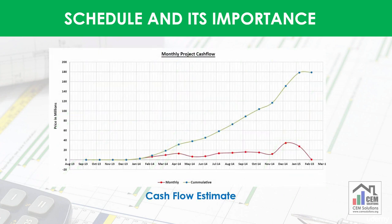Schedule helps in making project funding requirements or cash flow estimates. Cash flow is a document or graph which shows periodic distribution of cost of the project on the basis of the timetable of activities. With a cash flow estimate, progress of the contractor can be monitored, and it is also used by the client to make funds ready for the contractor.